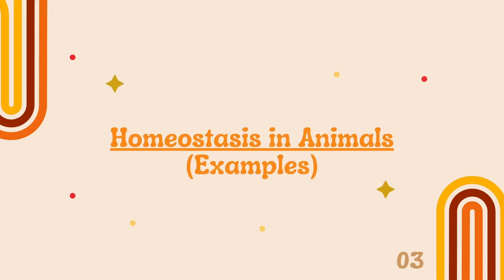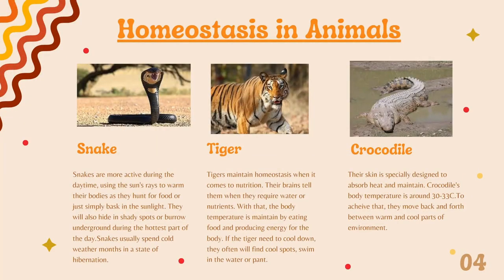Homeostasis in animals. So there are some examples for that. Snake: Snakes are more active during the daytime using the sun's rays to warm their bodies as they hunt for food or just simply bask in the sunlight. They will also hide in shady spots or burrow underground during the hottest part of the day. Snakes usually spend cold weather months in a state of hibernation.